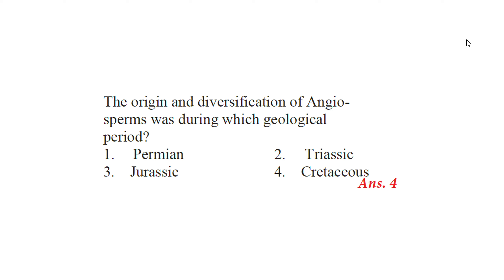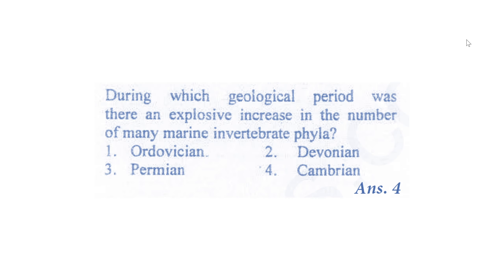First question: the origin and diversification of angiosperms was during which geological period? The right answer would be option 4 – Cretaceous. The origin and diversification of angiosperms was during the Cretaceous period.